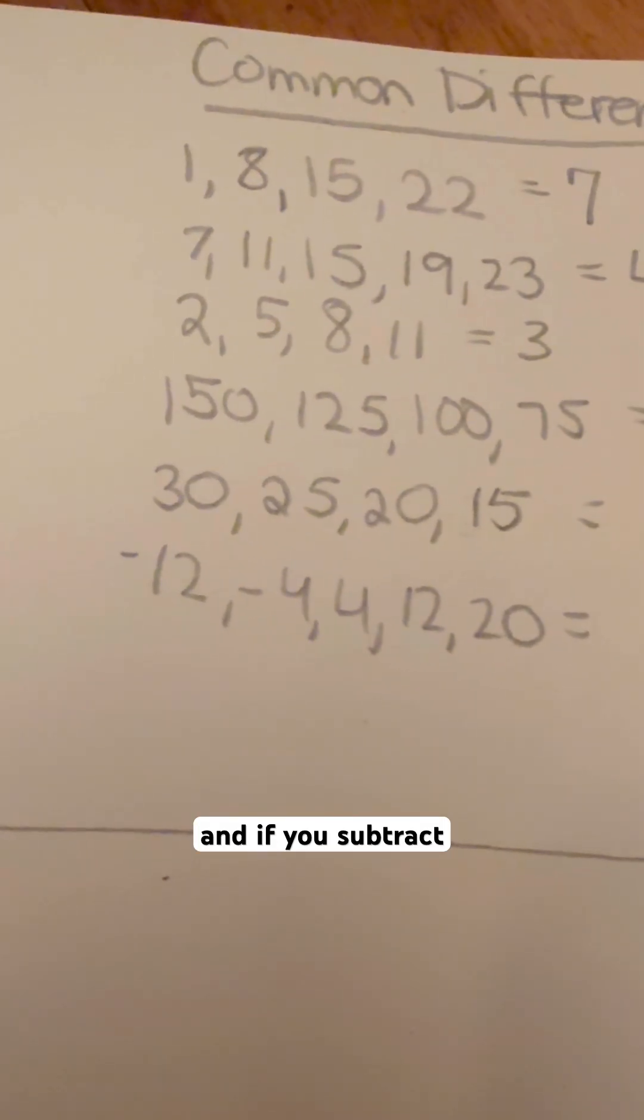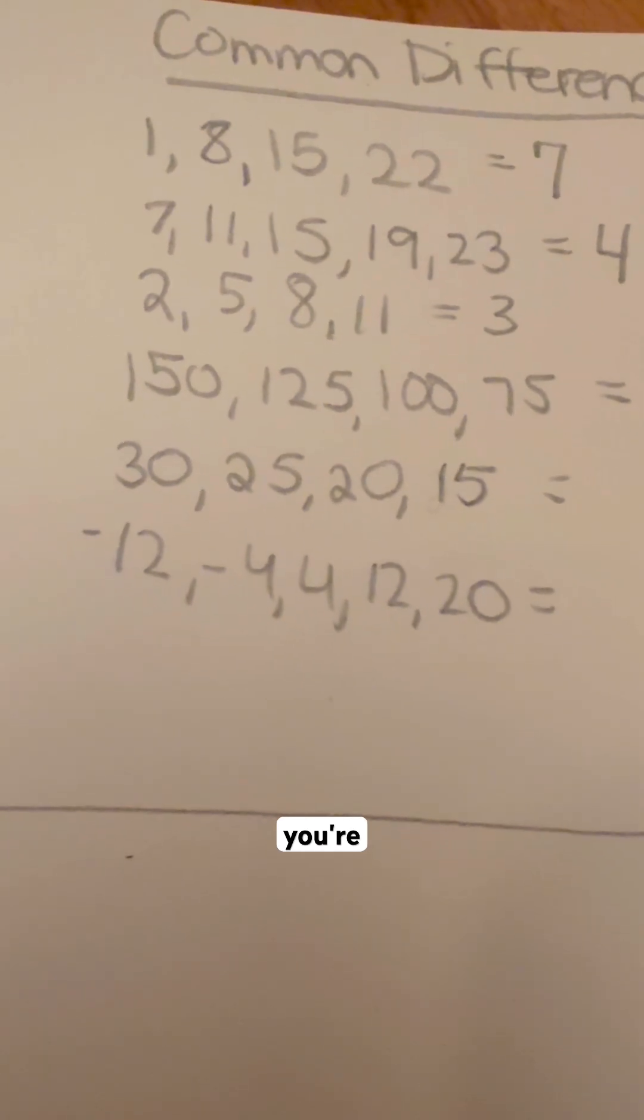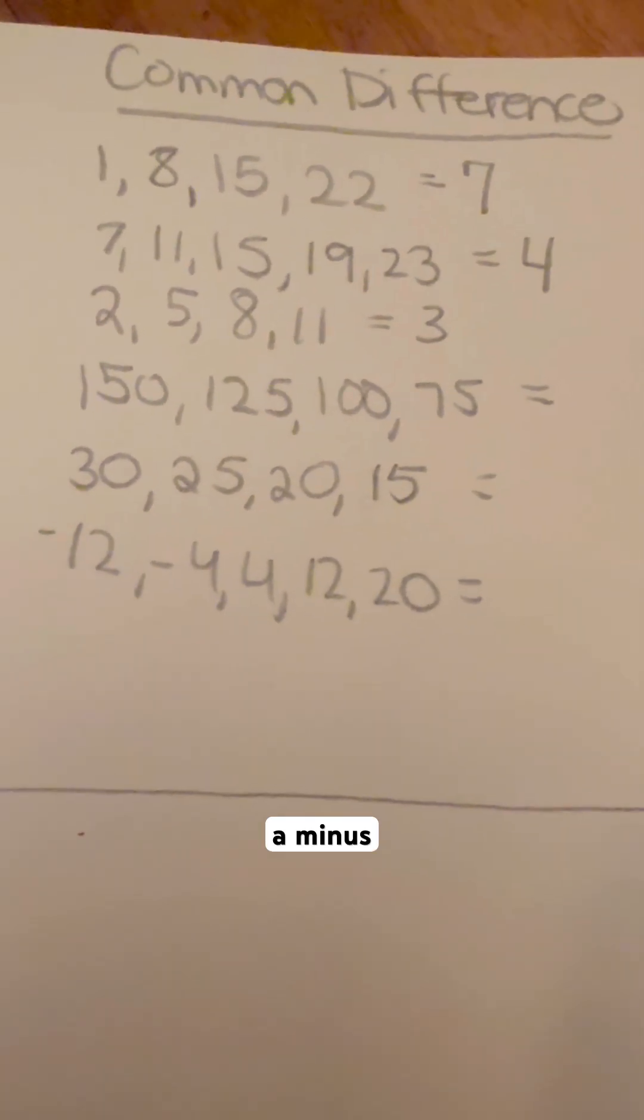And if you subtract 25 from 125, you're going to get 100. And so you keep doing minus 25. So your common difference on this one is minus 25.